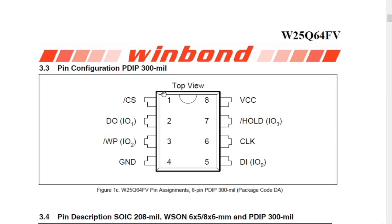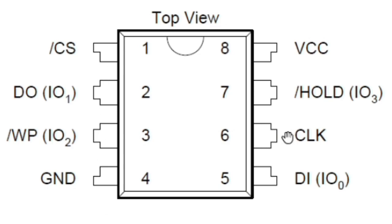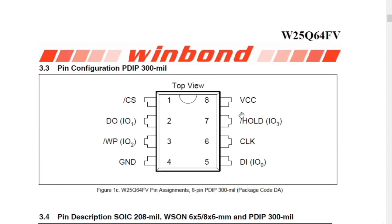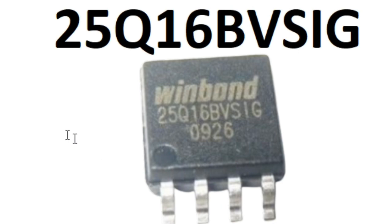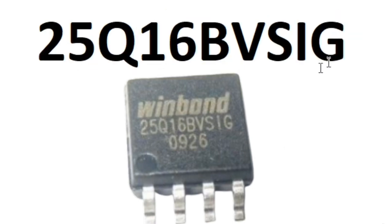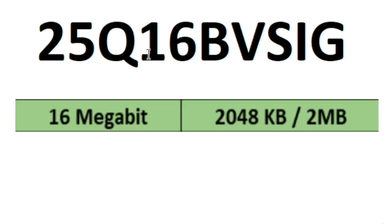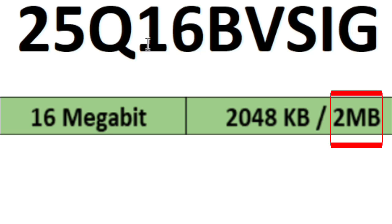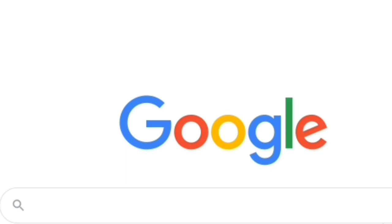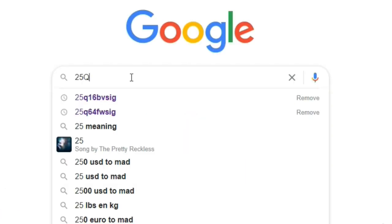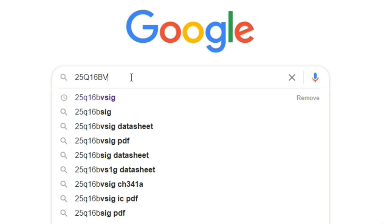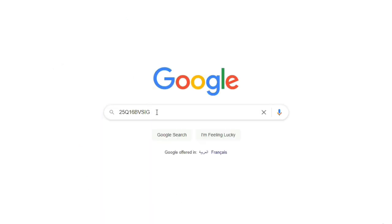As you can see here, this is an 8-pin BIOS chip. I will show you how to download any BIOS chip datasheet you want. Let's assume we have a BIOS chip with the reference 25Q16BVSIG. Here we have '16', which is the size of the BIOS chip — 16 megabit, which equals 2 megabyte. Let's go to Google and type this reference 25Q16BVSIG and then press enter.